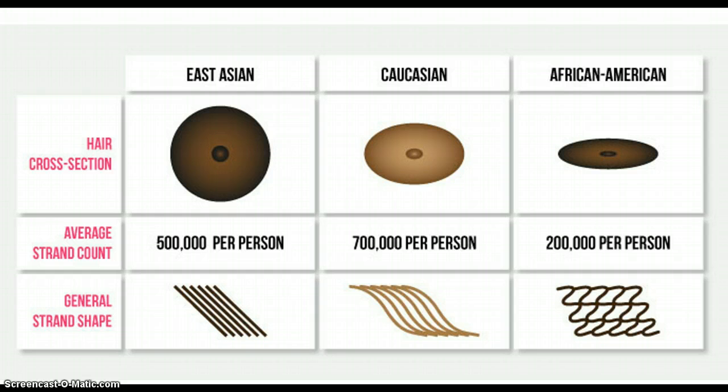All you need to really remember is that the mongoloid is going to be your biggest strand of hair. Caucasian is in the middle of everything, and then African American is going to be your smallest.